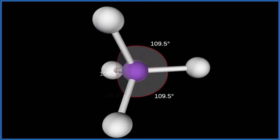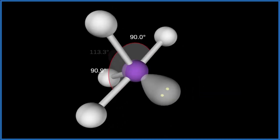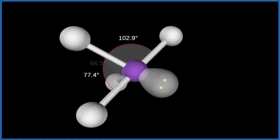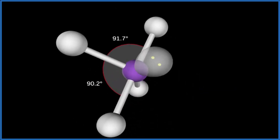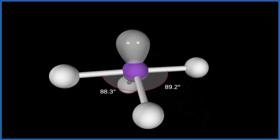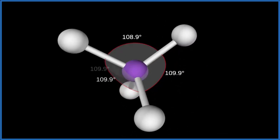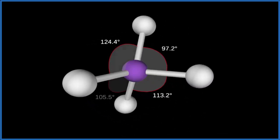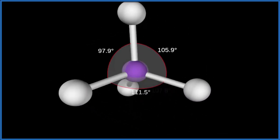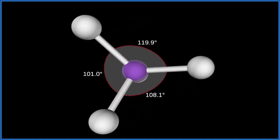If we had a lone pair, lone pairs occupy space, so they would actually push the other atoms down and give us a different molecular geometry. But since we don't, this is the tetrahedral molecular geometry for CH4.